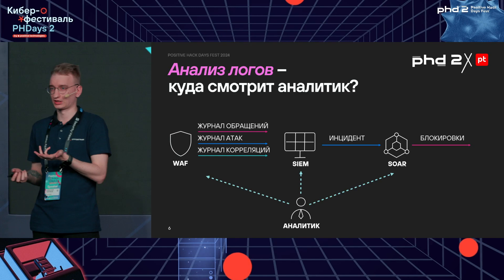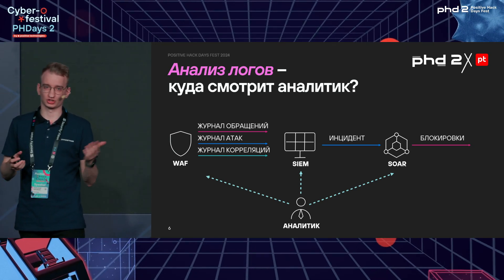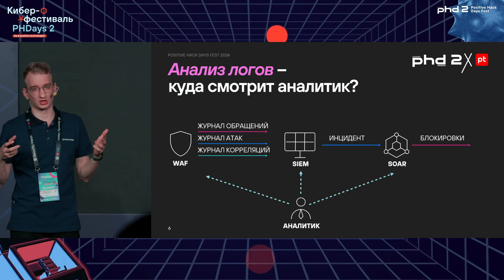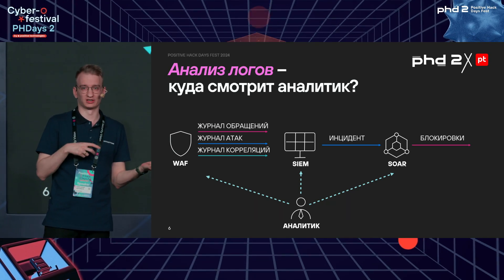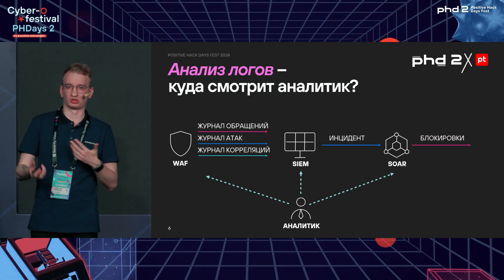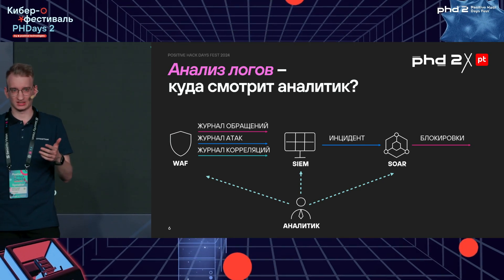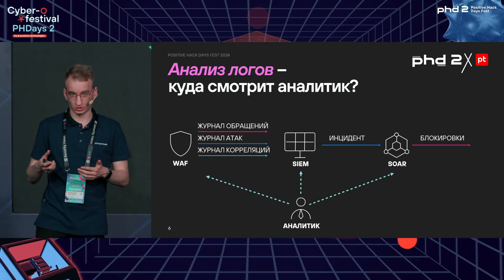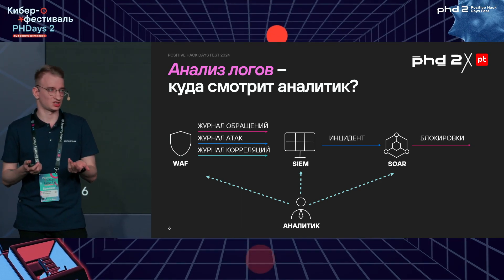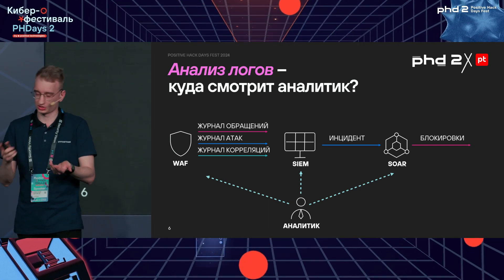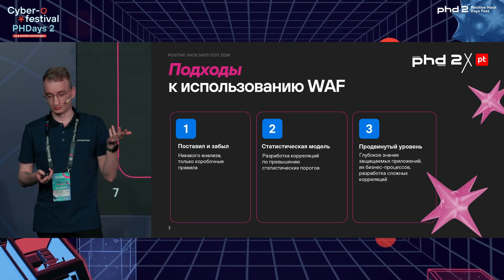The attack log will show what has matched the signature analysis done by the WAF. The correlation log will go to SIEM for more advanced analytics and correlation analysis. So the stuff that got segregated at the WAF level inside SIEM will become a proper large-scale correlation, and you won't generate too many false positives. This will then go to SOAR for response, such as IP blocking.